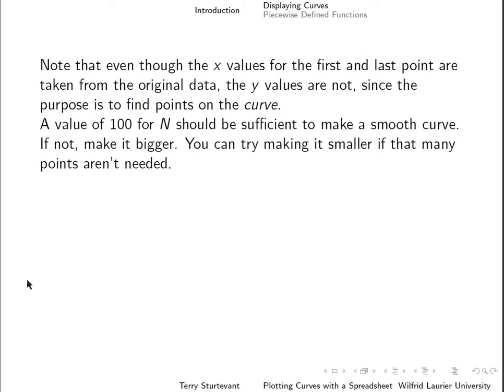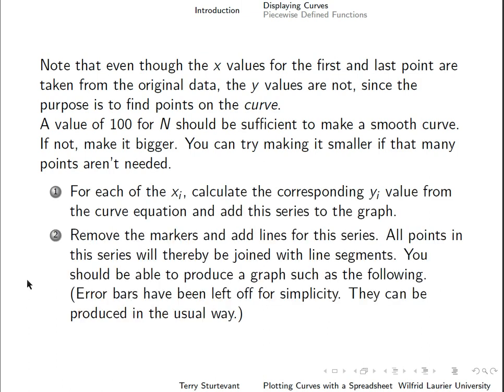So for most graphs, a value of say 100 for n should be sufficient to make a smooth graph. If not, make a bigger value for n, and you can adjust the number to find how many points you need.